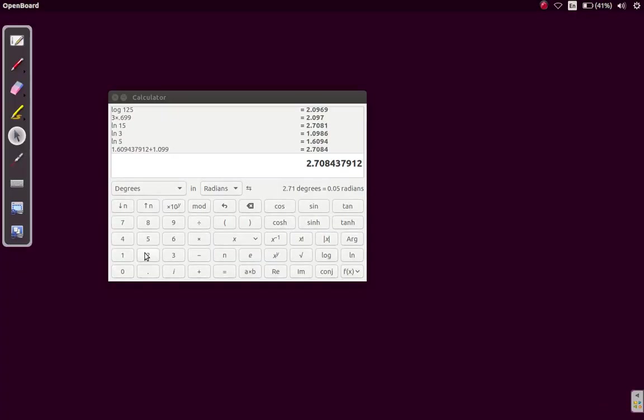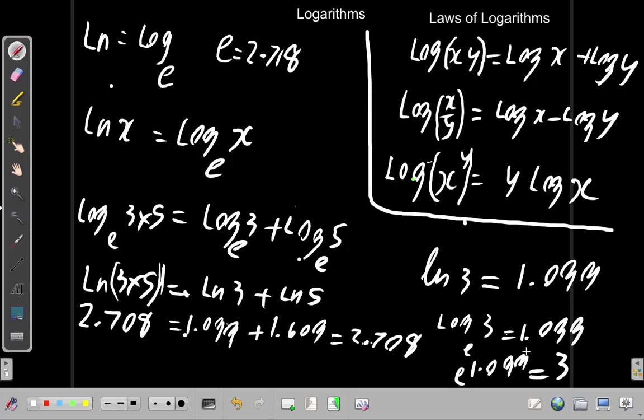Let's try that. 2.718 raised to the power of 1.099 equals 3. Even though it said 3.00203, it's close enough so it's 3.